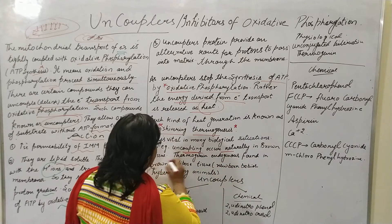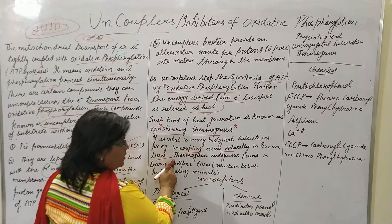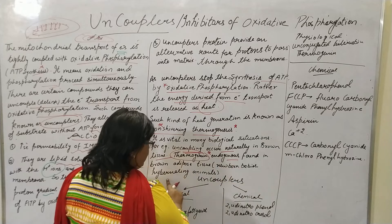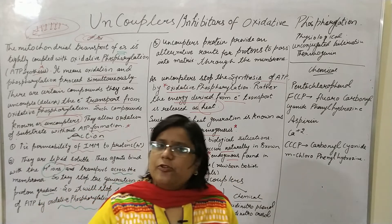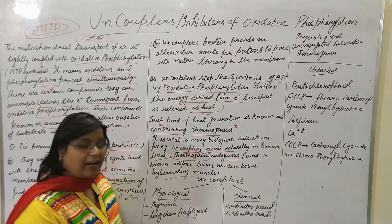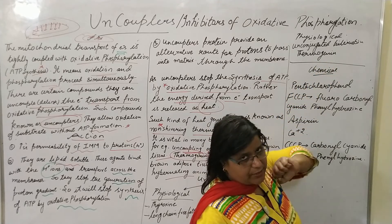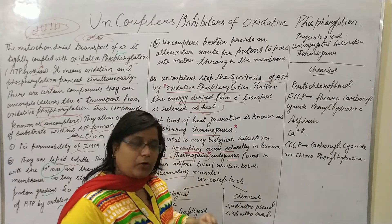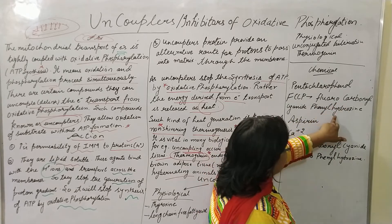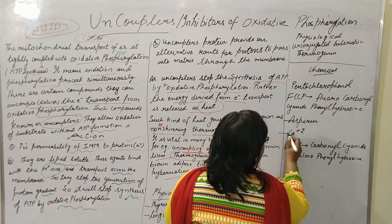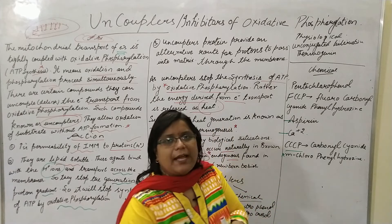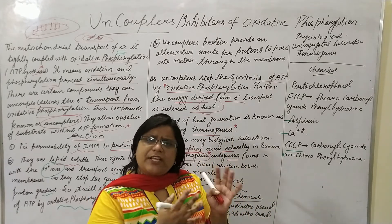An example of a natural uncoupler is thermogenin, an endogenous protein found in brown adipose tissue of newborn babies and hibernating animals. The uncouplers are of two types: physiological and chemical. The physiological uncouplers include thyroxine, long-chain free fatty acids, conjugated bilirubin, and thermogenin. The chemical uncouplers include 2,4-dinitrophenol, 2,4-dinitrocresol, pentachlorophenol, FCCP (fluorocarbonyl cyanide phenylhydrazine), aspirin, calcium, and CCCP (carbonyl cyanide m-chlorophenyl hydrazone). These are the chemicals which act as uncouplers.